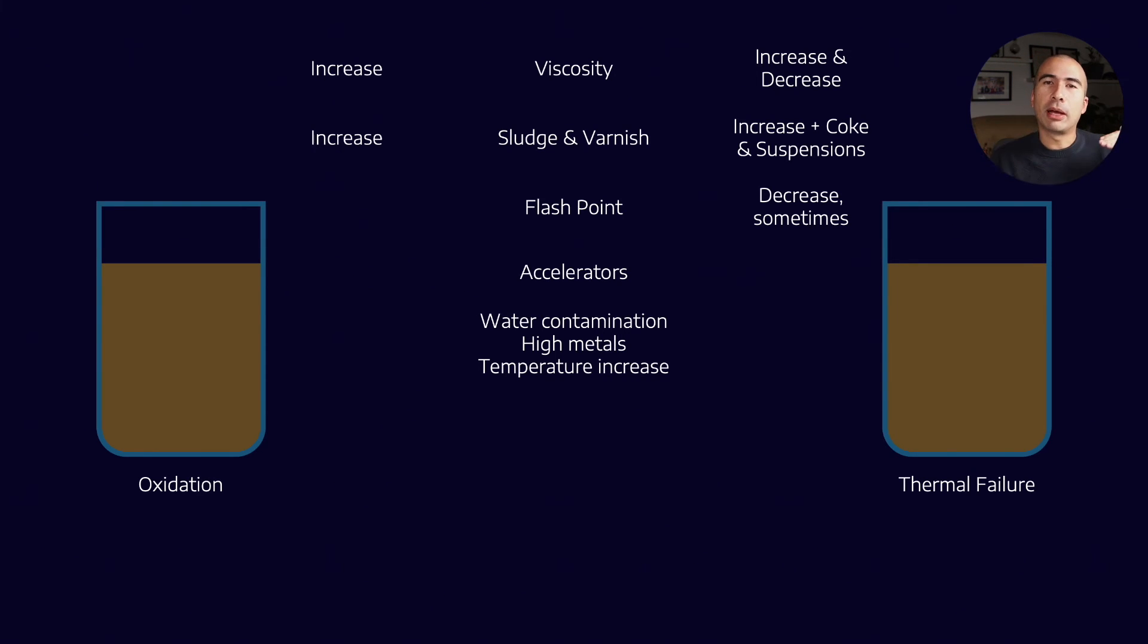Now let's think about what accelerates oxidation versus thermal failure. There's plenty of things which are what we would call pro-oxidants. For example, exposure to radiation increases oxidation. Water contamination is a big one. Exposure to metals because they act as catalysts that catalyzes the oxidational reaction. And we know from the Arrhenius rate rule that temperature increases double the rate for every roughly 10 degrees Celsius increase.